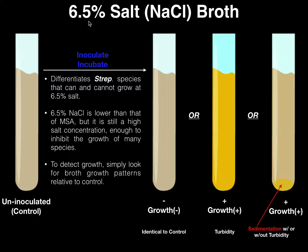Staphylococcus organisms can survive at 7.5%, so you would expect Staphylococcus to also survive at 6.5% salt broth. There are other species, though, that can now also survive at this concentration because it is 1% lower. For example, some species of Streptococcus — not all of them, but some — can actually survive here. Others cannot.